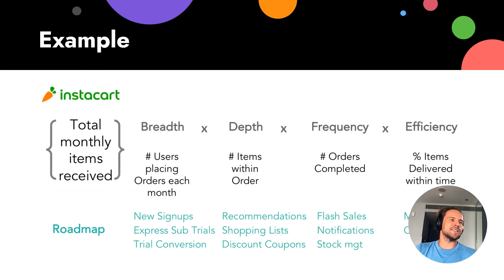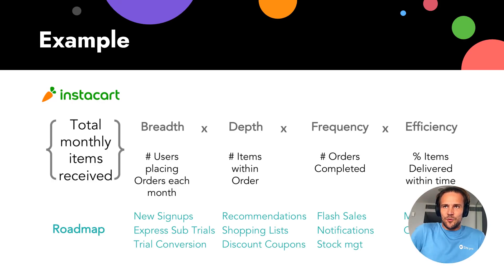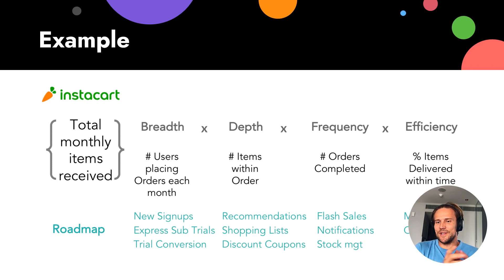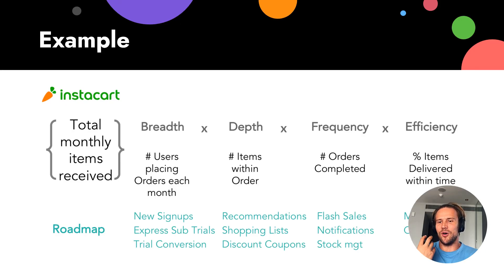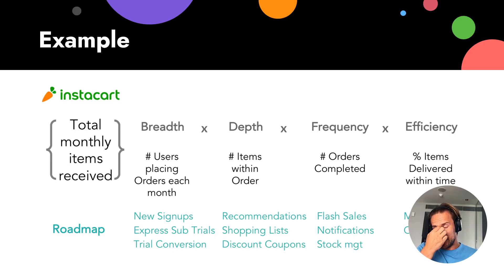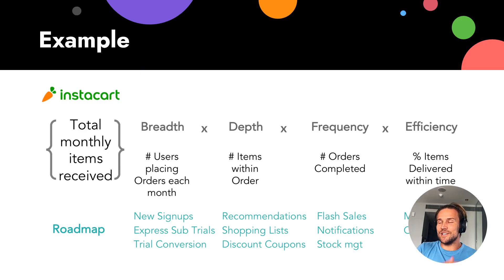Let's use Instacart as an example — they deliver food. Breadth: users placing orders each month. Depth: items per order — we need more users and more items. Frequency: how many orders completed — they want users doing transactions very often, several times per month. Efficiency: orders delivered on time — if an order wasn't delivered on time, it does not increase the Northstar metric.